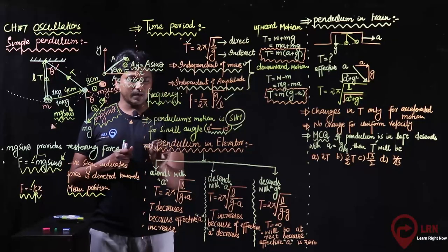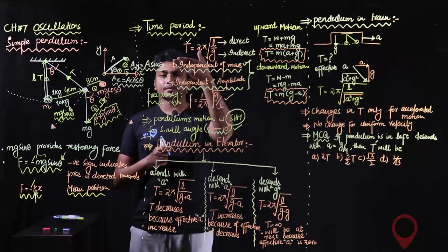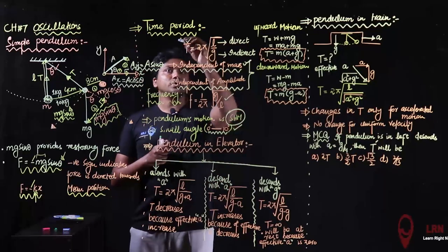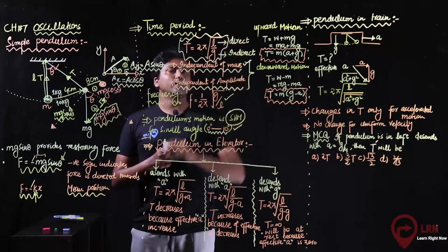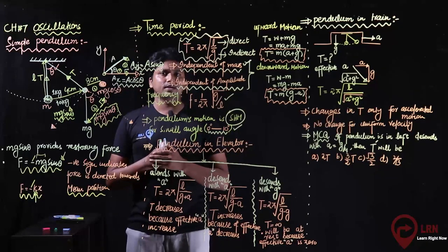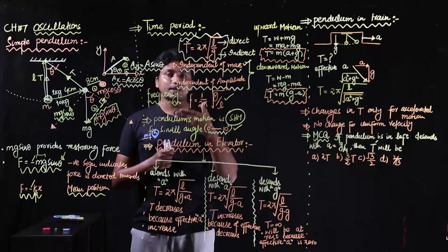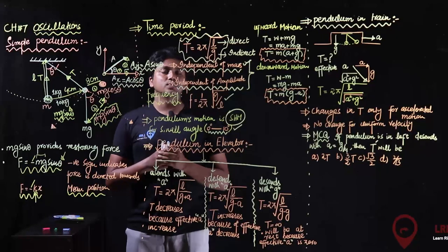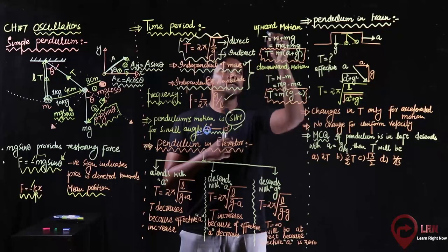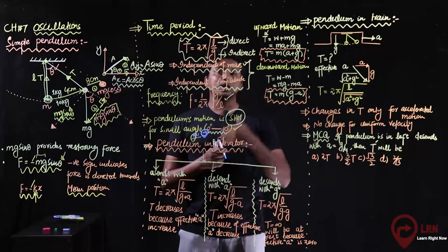Now let's talk about a pendulum placed in an elevator. The elevator can go up or down. If the lift is moving upward, the time period formula will change. To understand this, the concept of real weight and apparent weight is important. When an object moves upward with acceleration, its apparent weight increases. The mathematical equation is T = W + MA, where tension represents apparent weight. The effective acceleration becomes g + a.